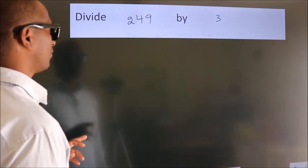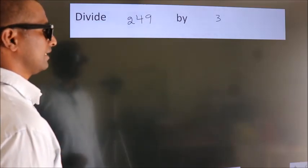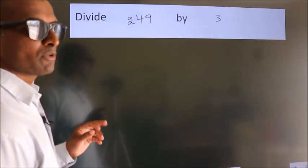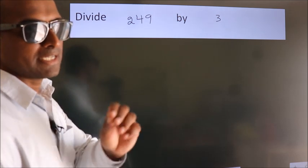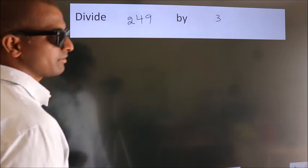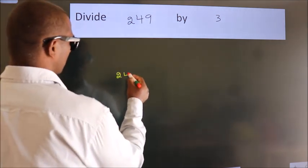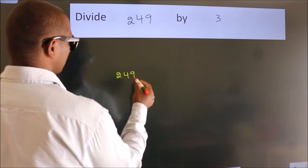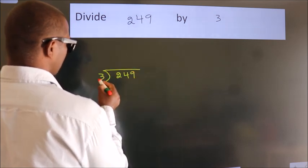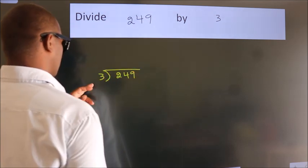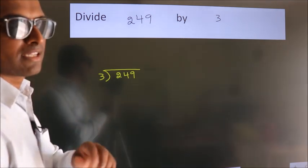Divide 249 by 3. To do this division, we should frame it in this way: 249 here, 3 here. This is your step 1.